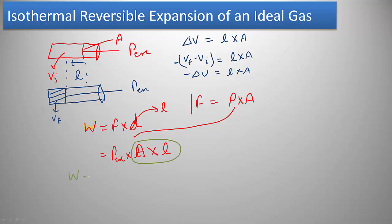Since A times L equals minus ΔV, we get that work equals minus P external times ΔV. For a proper process, integrating from V initial to V final gives W = minus P external ΔV. This is the expression for irreversible expansion or compression of a gas.